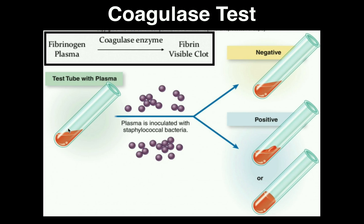If your bacteria in the test tube do not have coagulase, you get a negative result. Notice that compared from before to after we add plasma, it's still in the liquid form. That's a negative result, indicating the organism is coagulase negative. This is what we would expect for Staphylococcus epidermidis, which is the non-pathogenic form of staph.